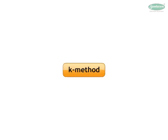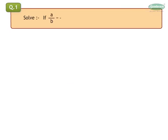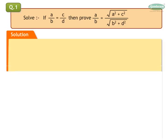We now use another method to solve the problem. It is called the K method. Exercise 6.5, Question 1: If A upon B is equal to C upon D, then prove that A upon B is equal to square root of A square plus C square upon square root of B square plus D square. Solution.